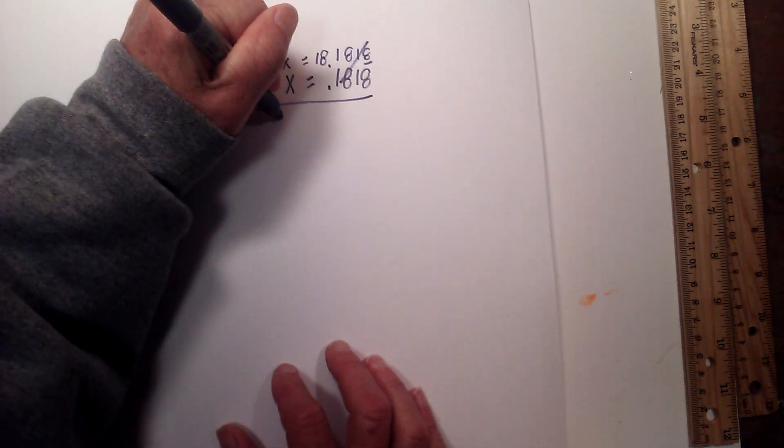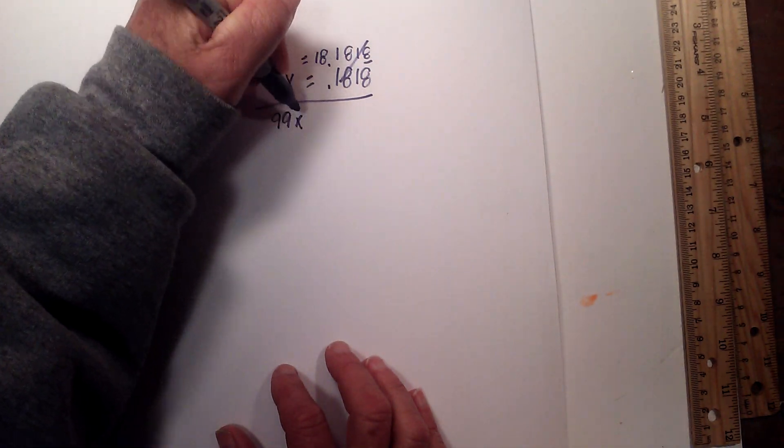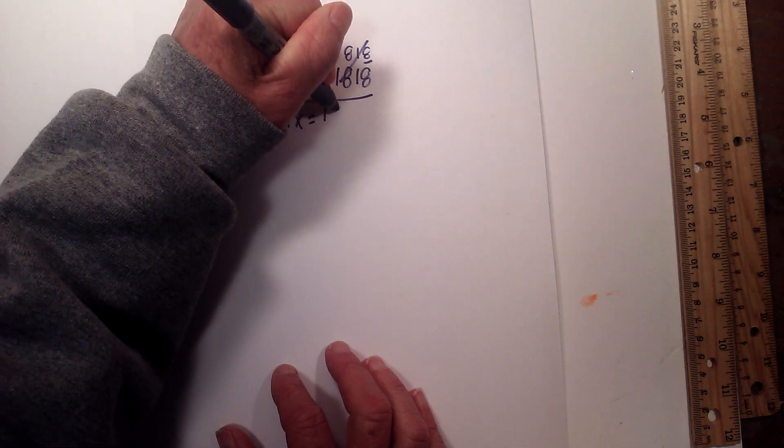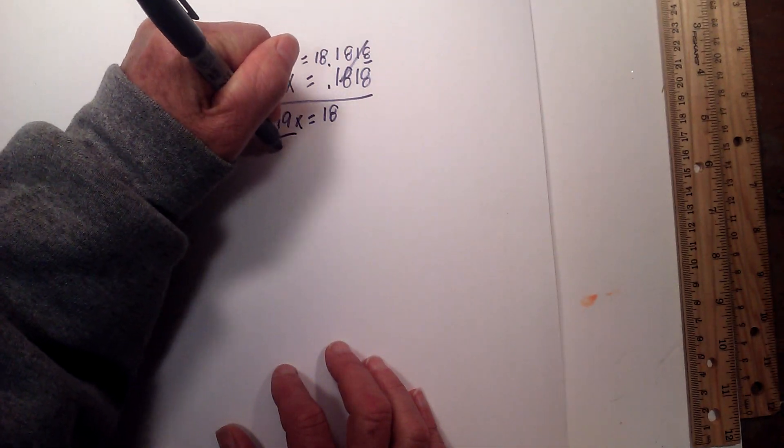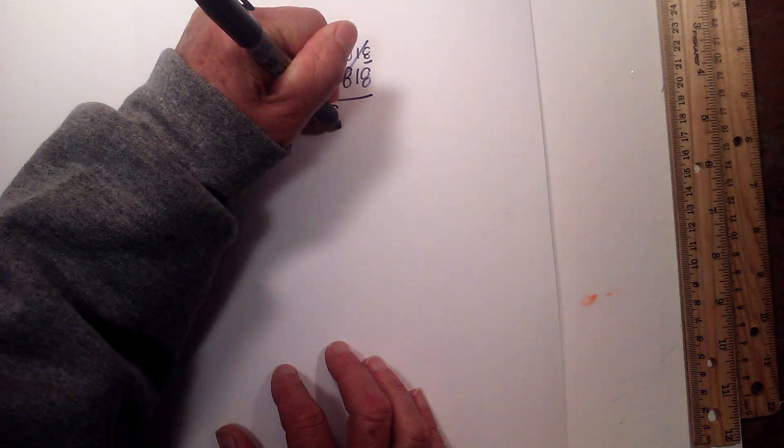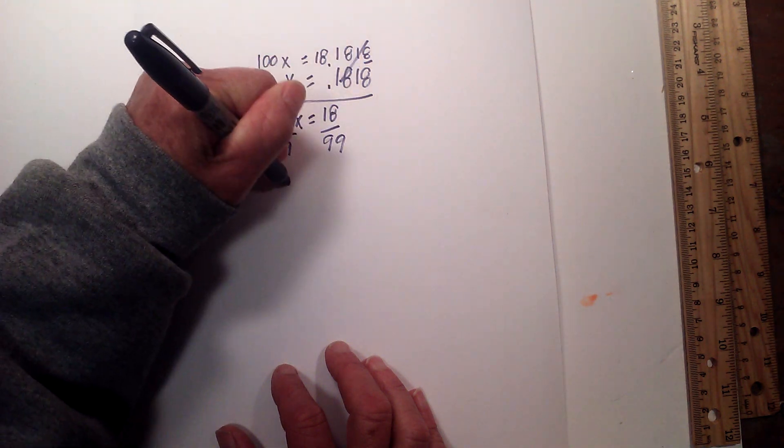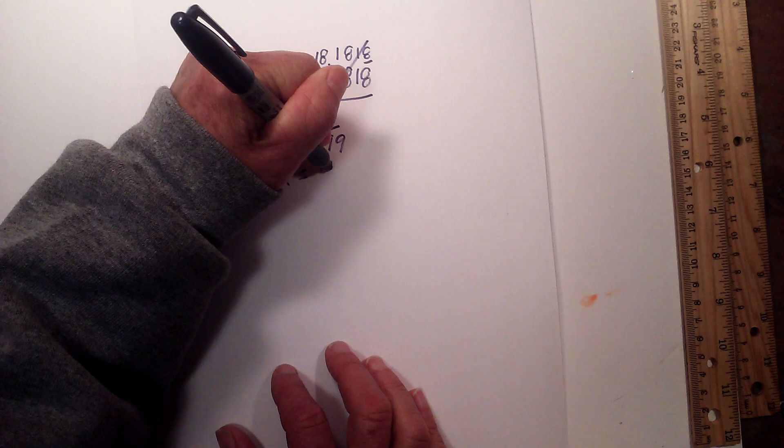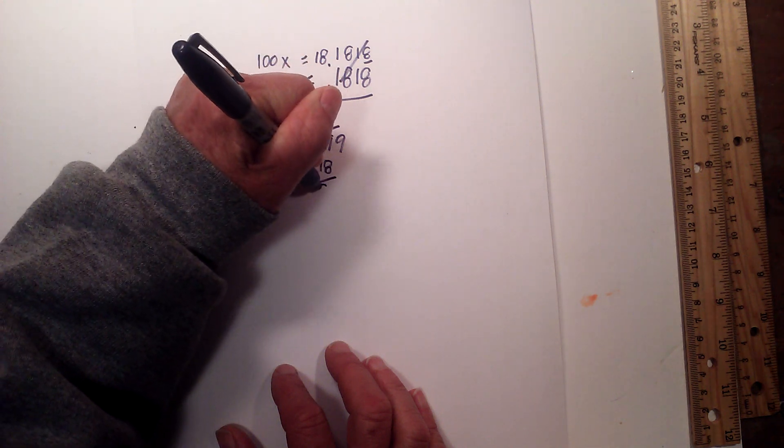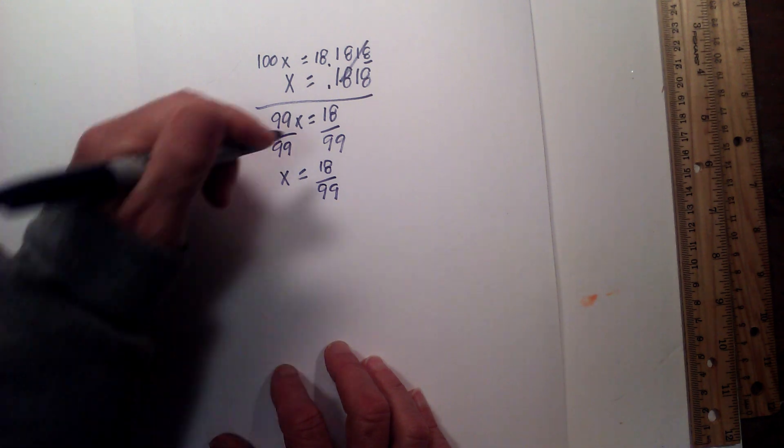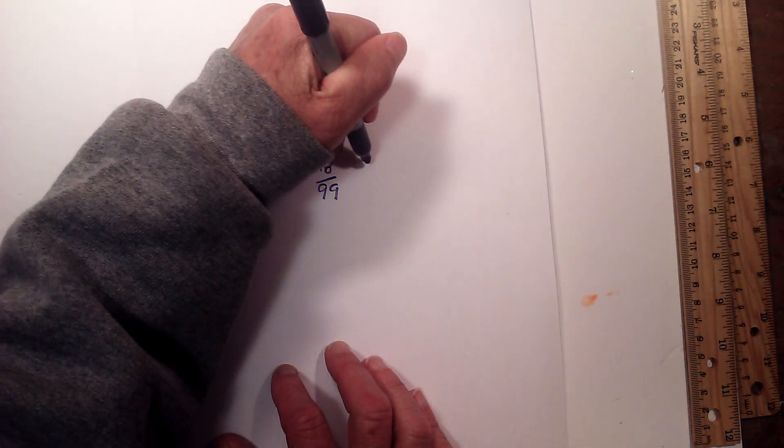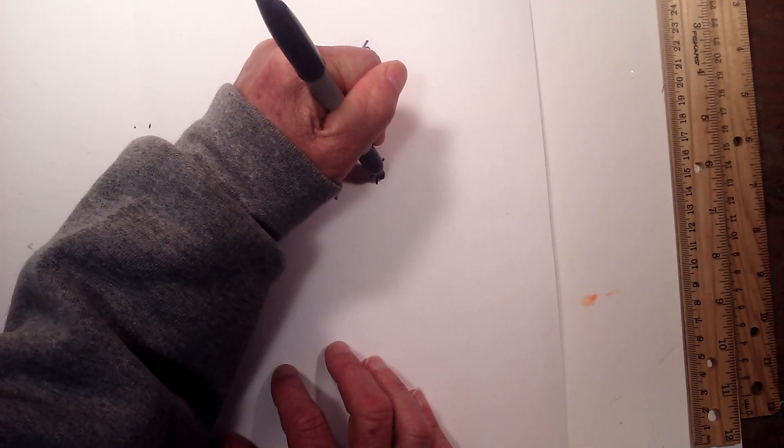We now have 99x equals 18. Divide both sides by 99. x equals 18/99, which simplifies to 2/11.